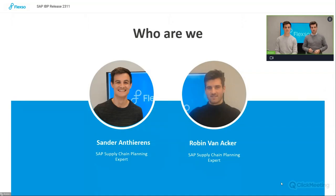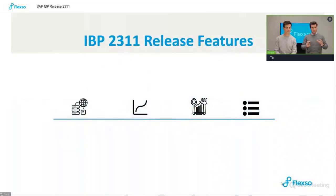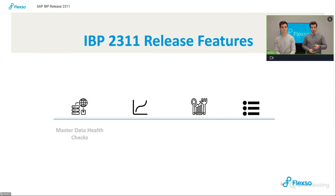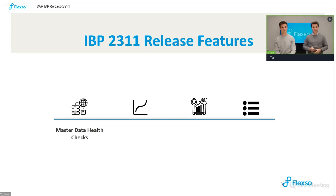We are going to guide you through today's session highlighting some of the features, ending off with some smaller topics as well. We have in total three main topics today, plus some miscellaneous topics and smaller improvements which come to all types of IBP landscapes. We'll start off with master data health checks, as SAP continues on the journey of making master data more reliable and more accurate.